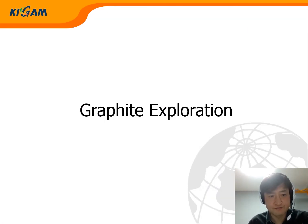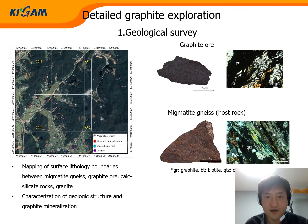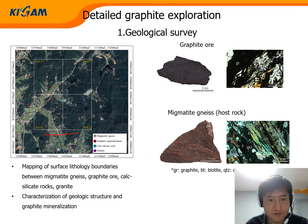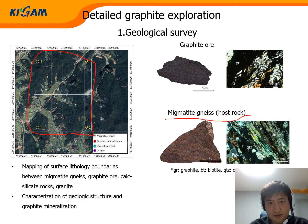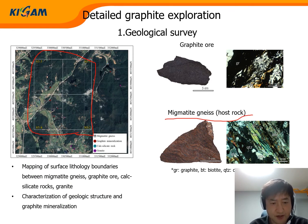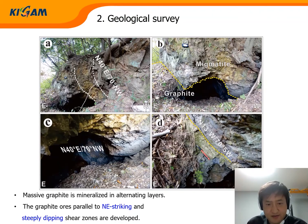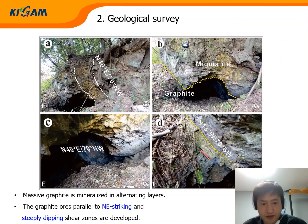Now we move to graphite exploration. This project aims to find high-potential areas for new graphite ore bodies. This area has abandoned small graphite mines. From the geological survey, the main rock type is migmatite. Our geological mapping identified surface boundaries between migmatite, graphite ore, calc-silicate rocks, and granite. It also characterized geological structure and graphite mineralization. In this area, massive graphite is mineralized in alternating layers. The graphite ores are parallel to the strike, and steeply dipping shear zones are developed.